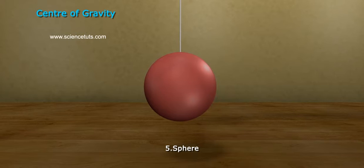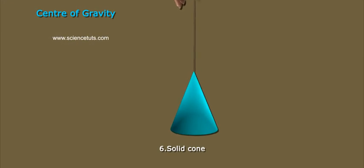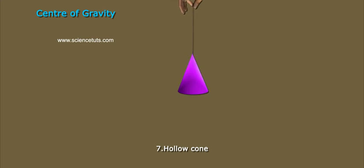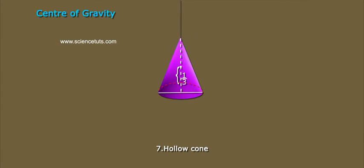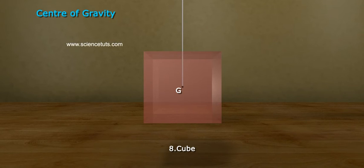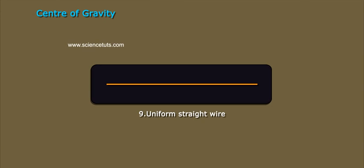5. Sphere: its center. 6. Solid Cone: one-fourth of its height from its base. 7. Hollow Cone: one-third of its height from its base. 8. Cube: the midpoint of the line joining the centers of opposite sides.